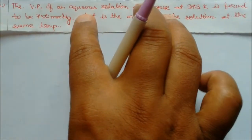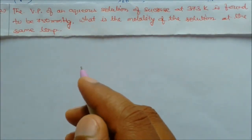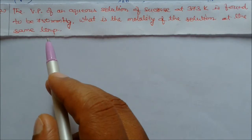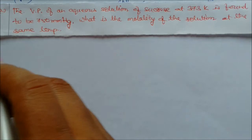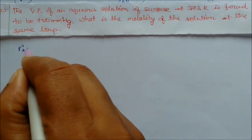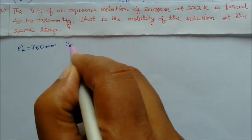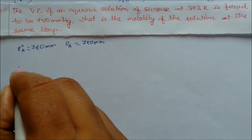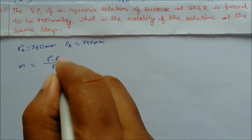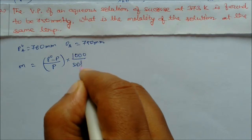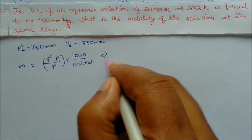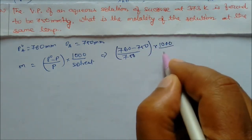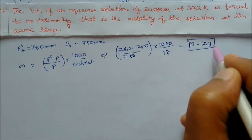Next problem: The vapor pressure of an aqueous solution of sucrose at 370 Kelvin is found to be 750 millimeter of mercury. What is the molality of the solution? We know P naught equals 760 mm Hg and P equals 750 mm Hg. Using the formula for molality: P naught minus P by P into 1000 by M₁, we get 760 minus 750 divided by 750 into 1000 divided by 18, giving 1.074 as the answer.